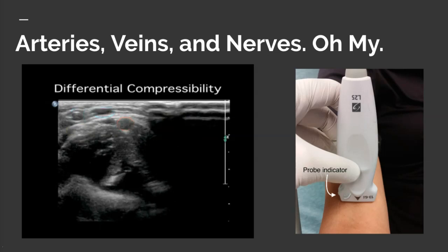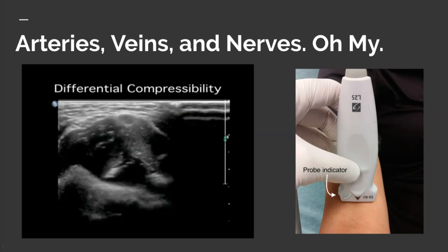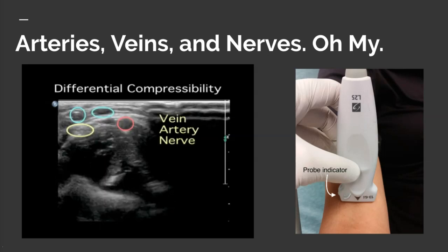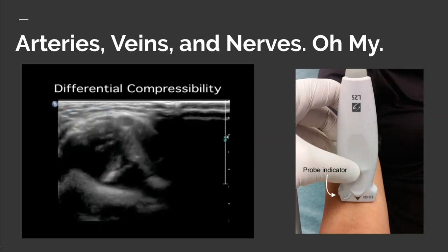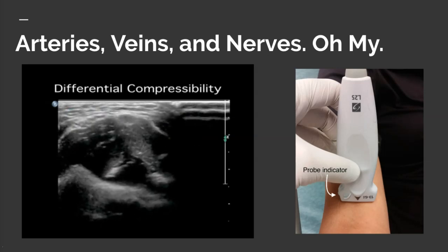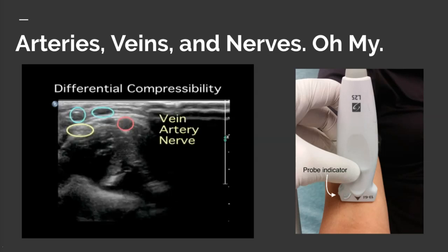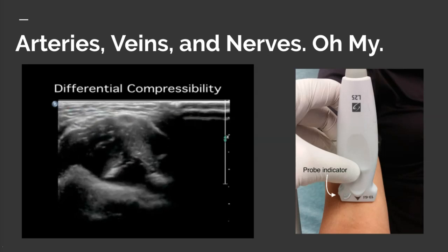Nerves are also non-compressible and non-pulsatile. You can see on the screen here — the circle in yellow is a nerve, the blue circles are veins, and the red is an artery.